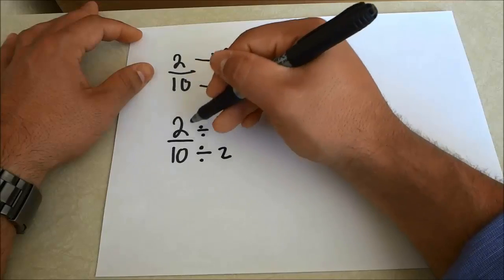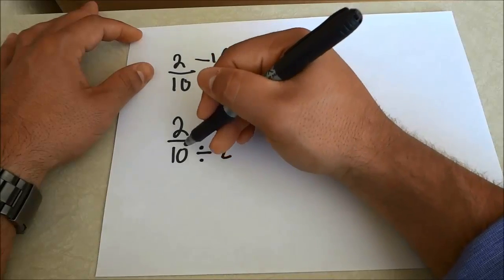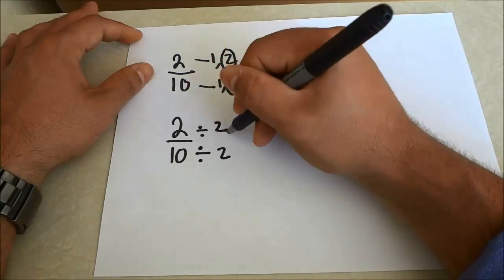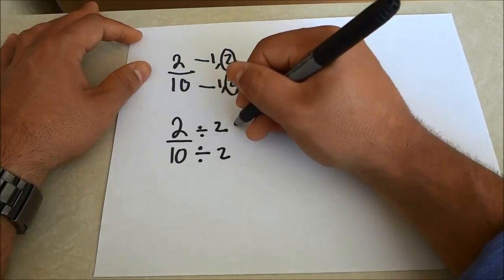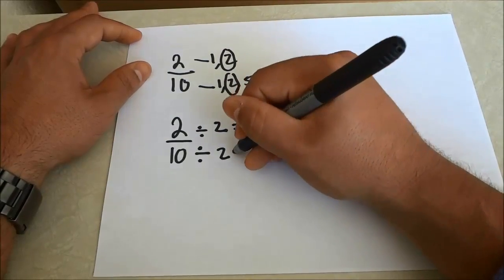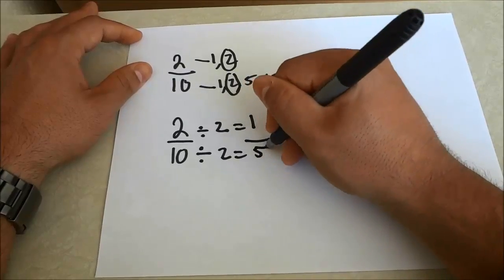So we take the top number, which is the numerator, and the bottom number, which is the denominator, and we divide them individually by the greatest common factor. So 2 divided by 2 is 1, and 10 divided by 2 is, and I'm just going to put the line there, is 5.